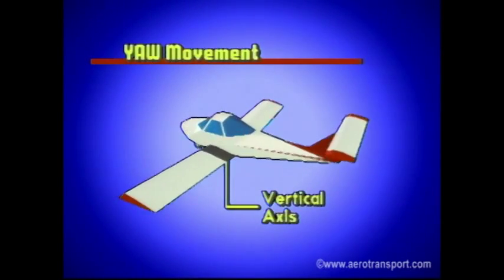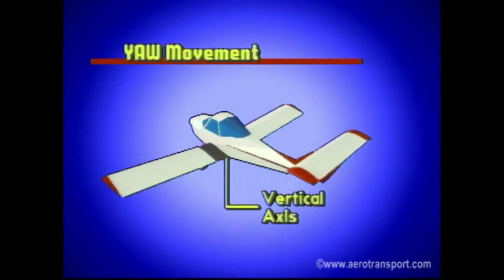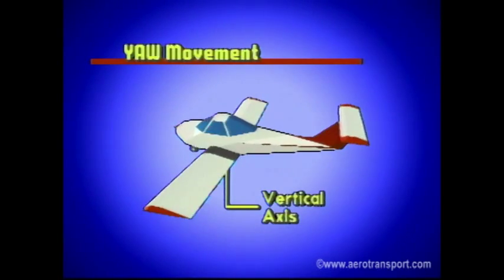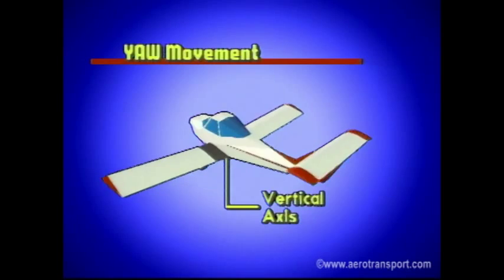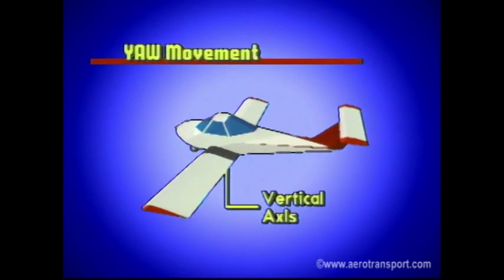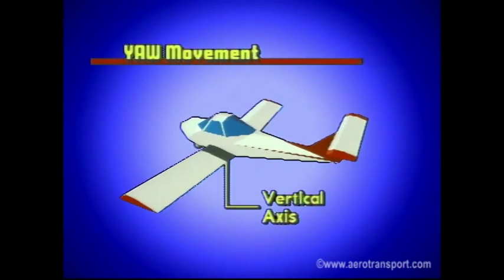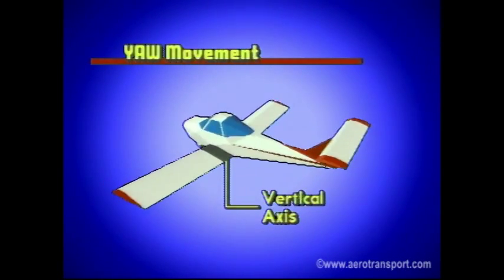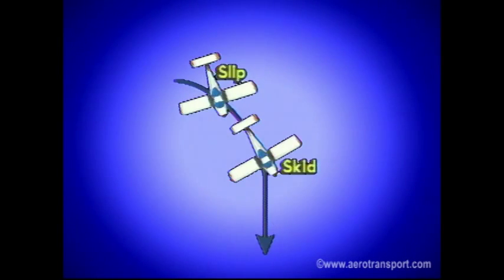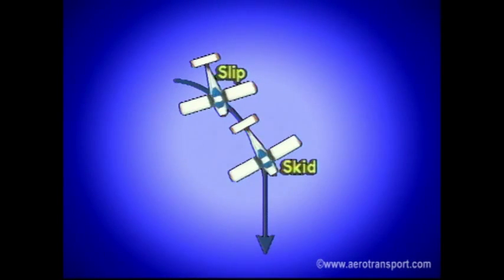Yaw is the movement of the aircraft about its vertical axis and is an undesirable movement. It is caused by turbulence, power changes, side slip, aileron drag, or improper use of the rudder. Yaw is controlled by the rudder — not produced by it. If yaw is not controlled, the aircraft will slip or skid and may ultimately roll. To maintain balanced flight it is necessary to control yaw.